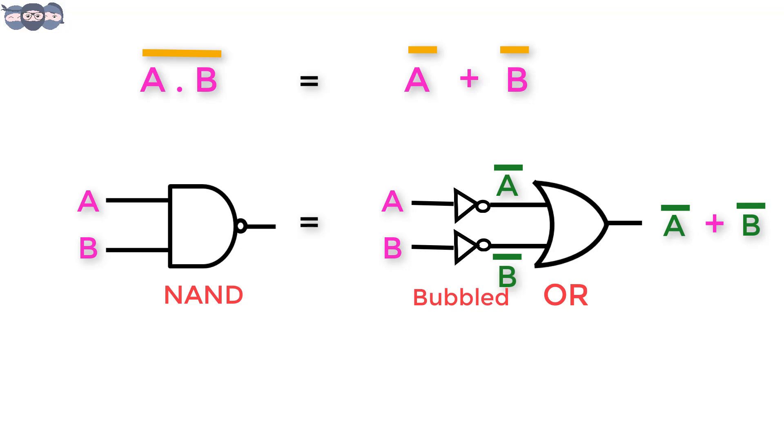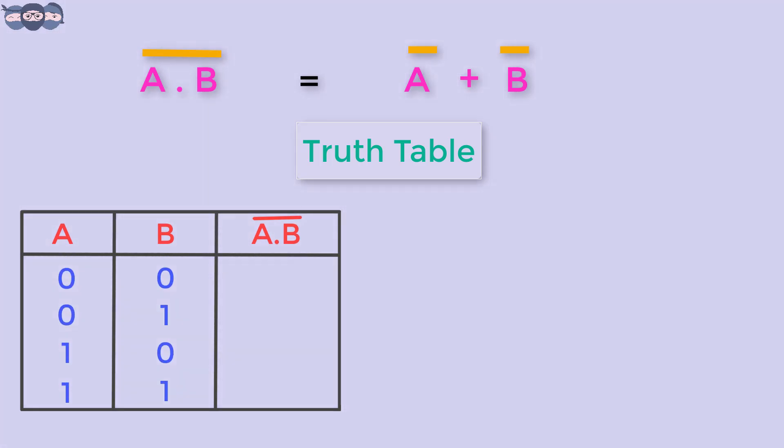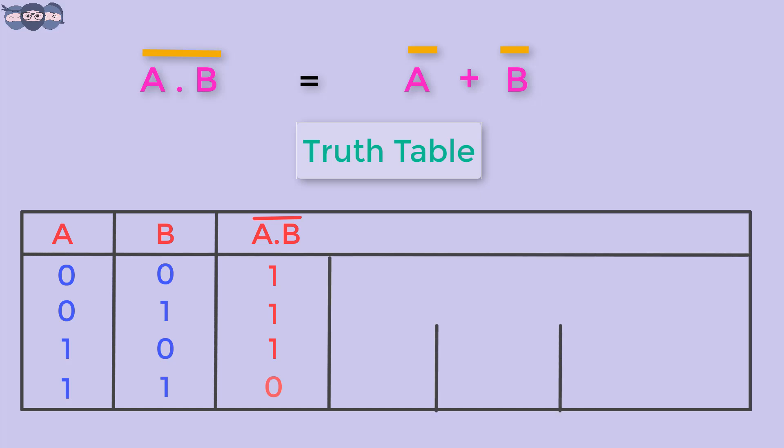It can also be proved using the truth table. By now we are familiar with the truth table for a NAND gate. Let's fill the values for A bar. It is simple inversion - zero gets inverted to one and one gets inverted to zero.